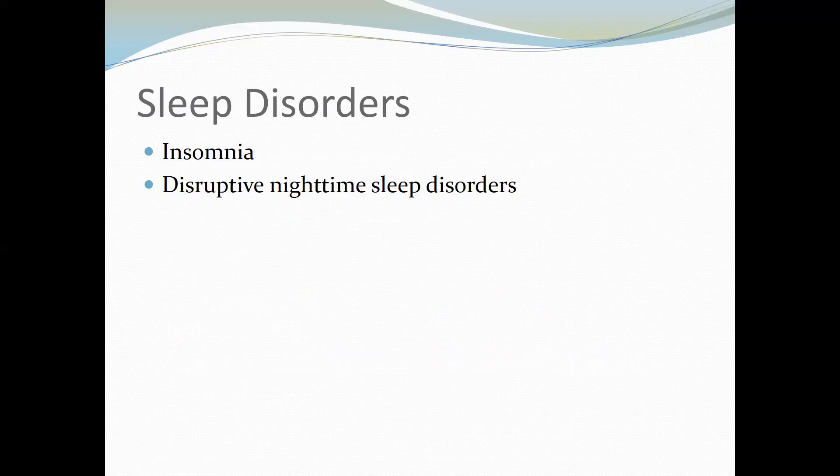Another common category in older adults is sleep disorders. About 50% of older adults complain of sleep problems at any given time. Sleep problems are important to understand because they increase risk for physical and mental health problems, functional disability, decreased quality of life, and increased mortality. Insomnia is very common: 15–45% of older adults have problems initiating sleep, 20–65% have disrupted sleep, and 15–54% have terminal insomnia.